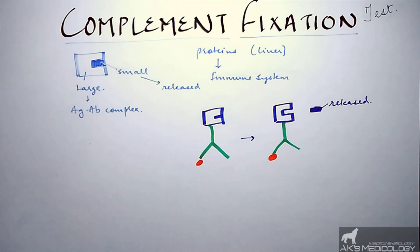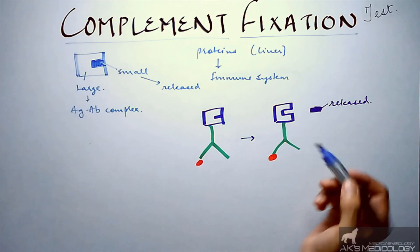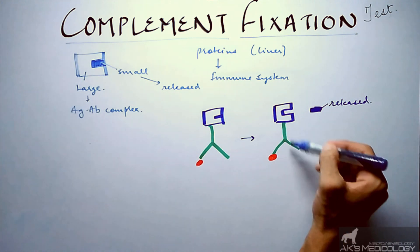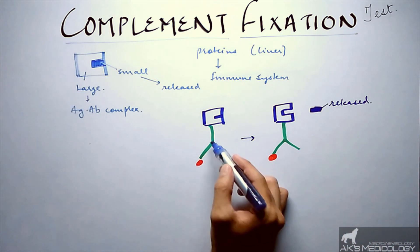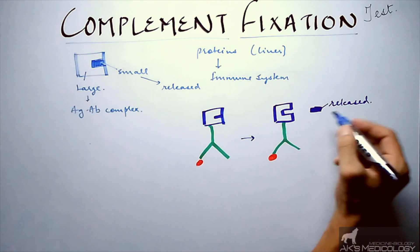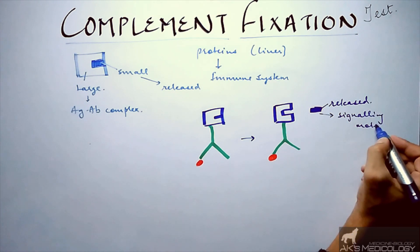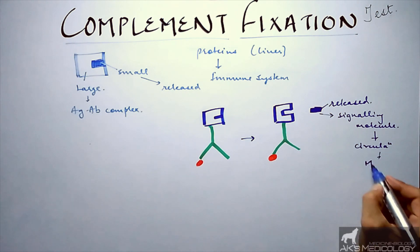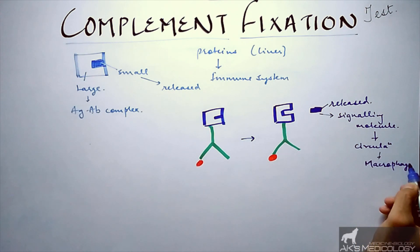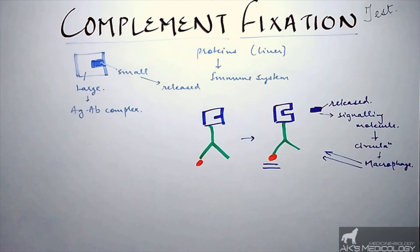Fixing of complement protein can be defined as: the small or inactive part is released from the whole complement protein, and the active large part remains attached to the antigen-antibody complex. The small part acts as a signaling molecule, released into circulation where it attracts macrophages, which attack and phagocytize the antigen-antibody-complement complex — the main aim being to kill the antigen.